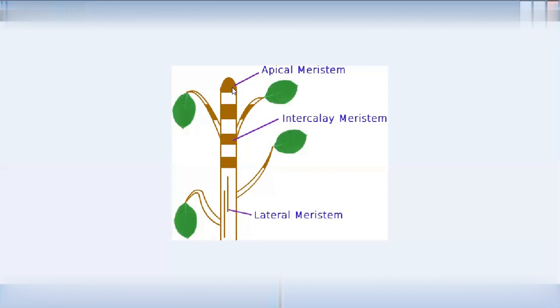There are three types of meristem: apical meristem, intercalary meristem, and lateral meristem. The apical meristem is responsible for the height of the plant. Apical dominance is very common — the plant first grows tall, but later grows slightly sideways. The apical meristem drives height growth.